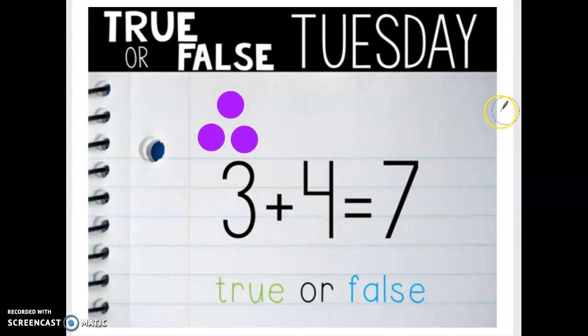Well next number I need to represent is the number 4. 1, 2, 3, 4. Well the plus sign means to join them, so I need to count how many total I have and see if it equals 7. Count with me. 1, 2, 3, 4, 5, 6, 7.